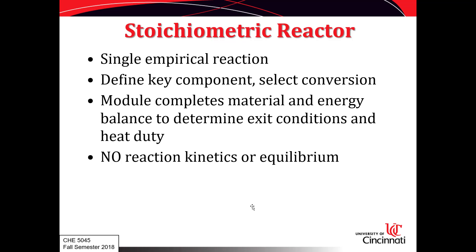The stoichiometric reactor unit operation does material and energy balances for a single empirically defined chemical reaction. You'll define a key component and select the conversion for that key component. When you run the stoichiometric reactor, the module completes the material and energy balances over the reacting system to determine exit conditions and calculates the heat duty. The stoichiometric reactor does not do any thermodynamic equilibrium calculations — all that happens is material and energy balances.